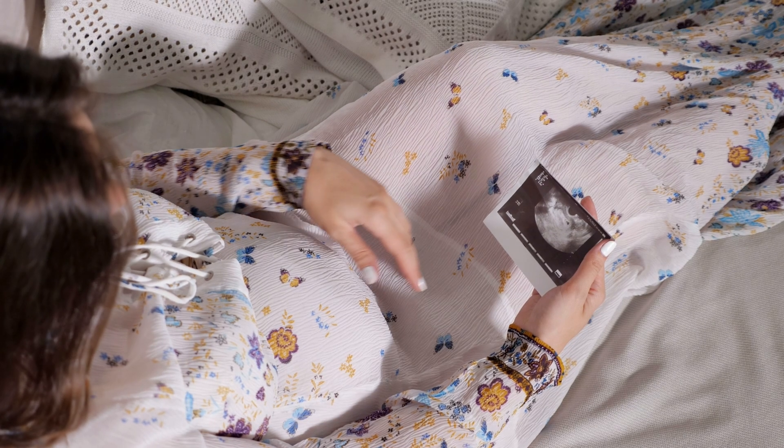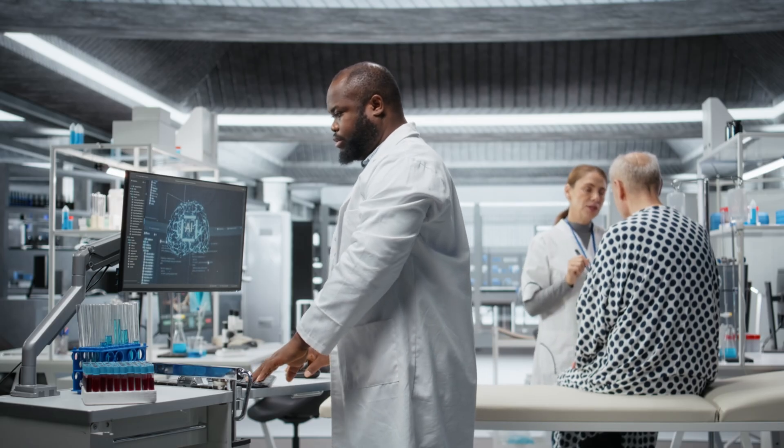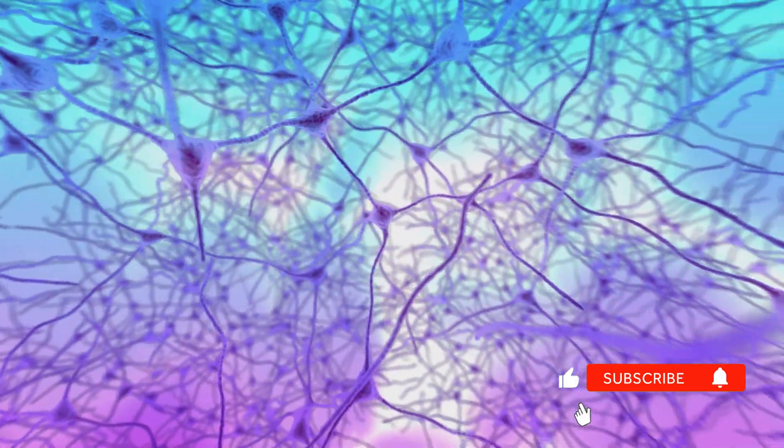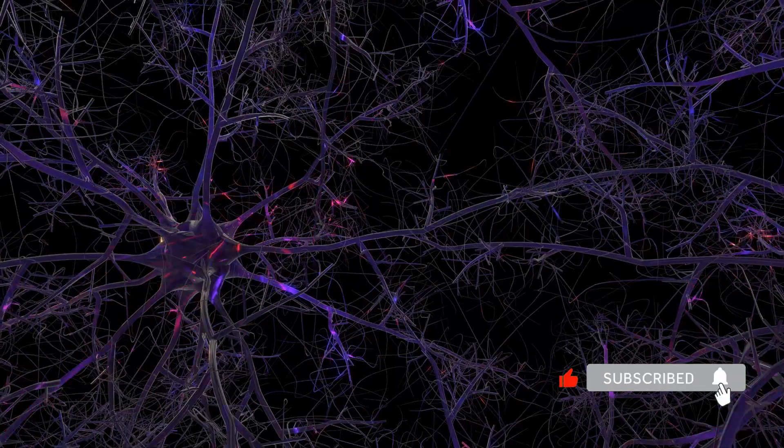Myth 3: Brain cells don't regenerate. After 25, you're born with all the brain cells you'll ever have. They die and never come back. Wrong. Researchers discovered neurogenesis. New neuron creation in adult brains. 700 new neurons every day. Even at 70. Even at 80.